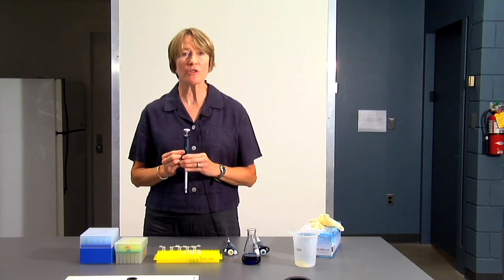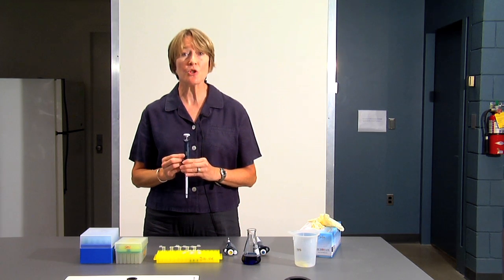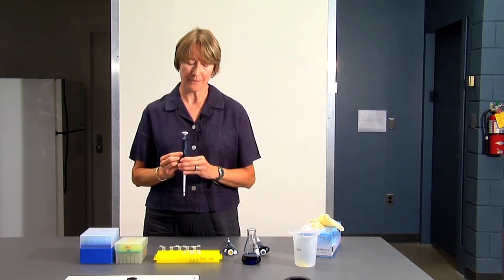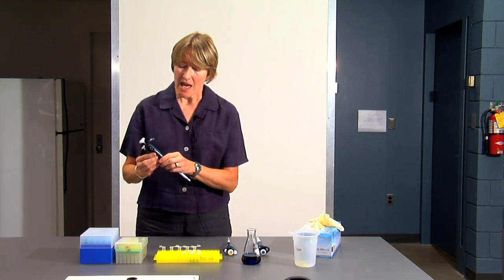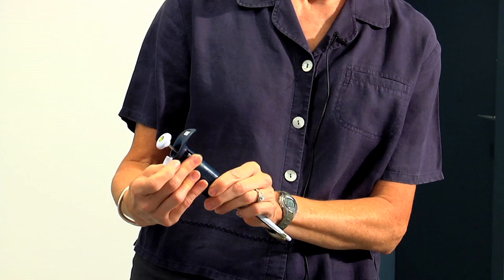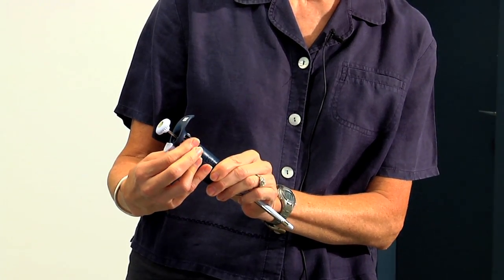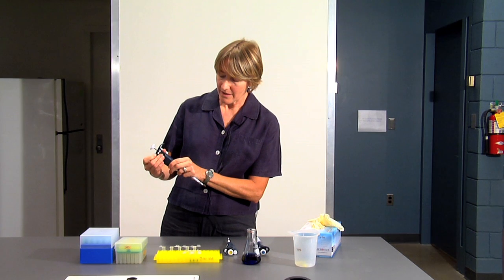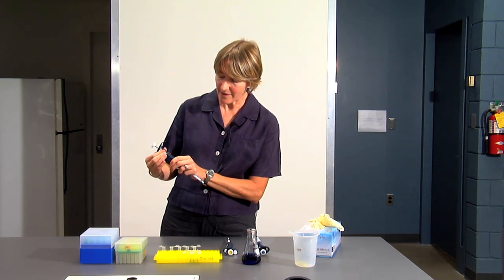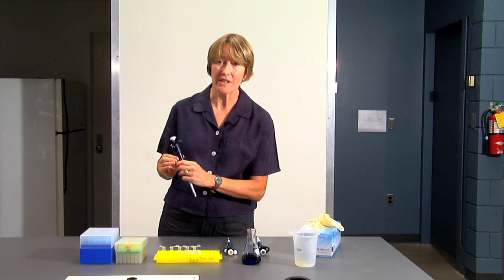If you wanted 200 microliters, you would set it at 200. 50 microliters would be 050. To set the pipette, you turn the barrel until the numbers appear in the window for the volume that you want. So I'm going to set this at 100 microliters or 100.